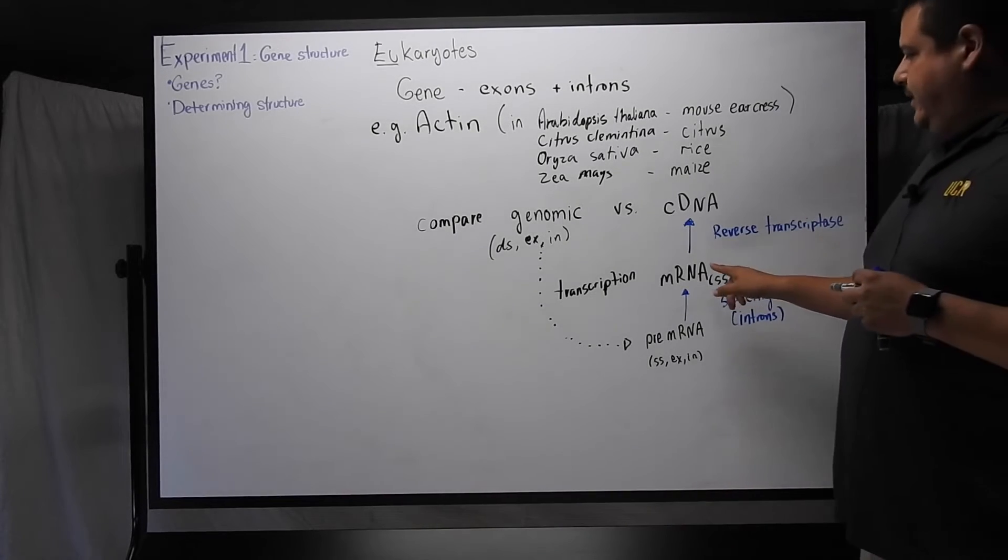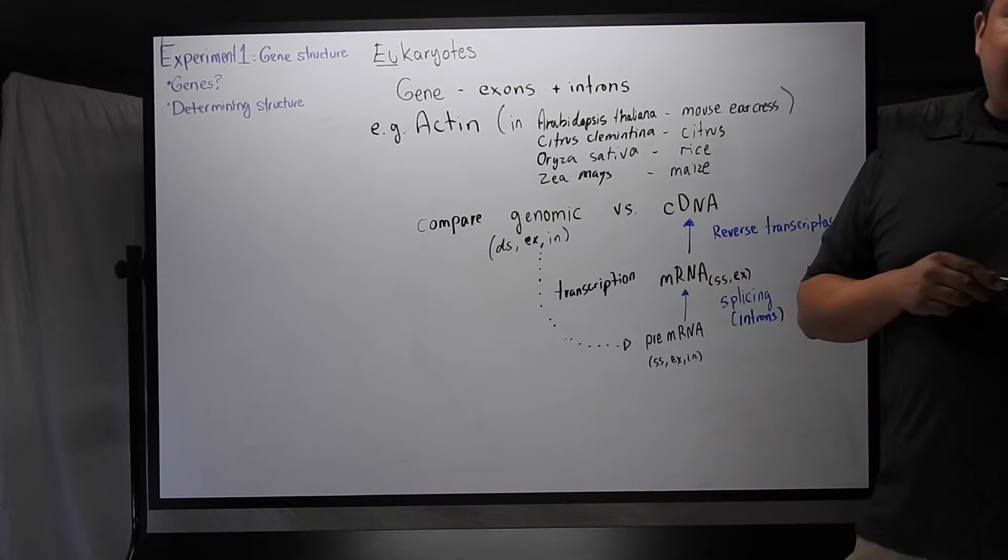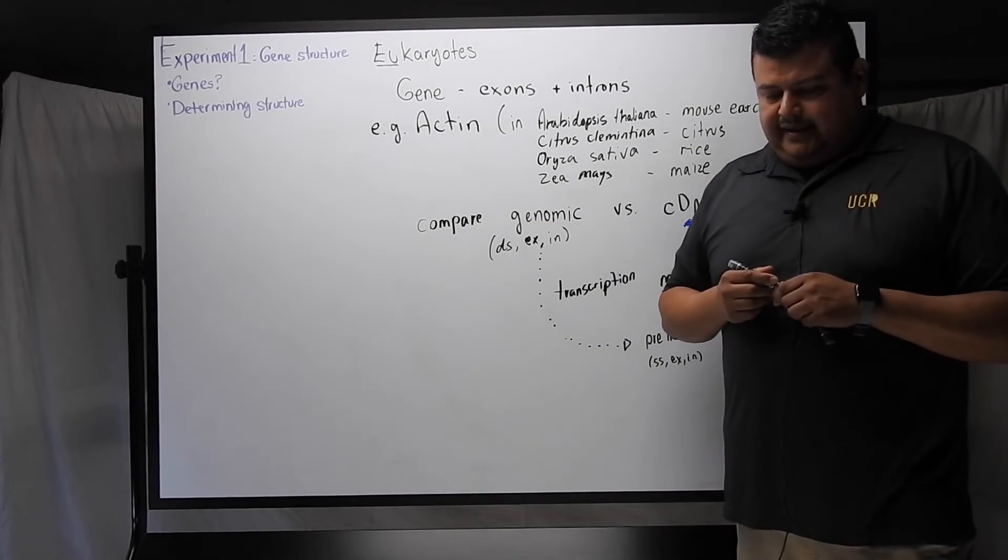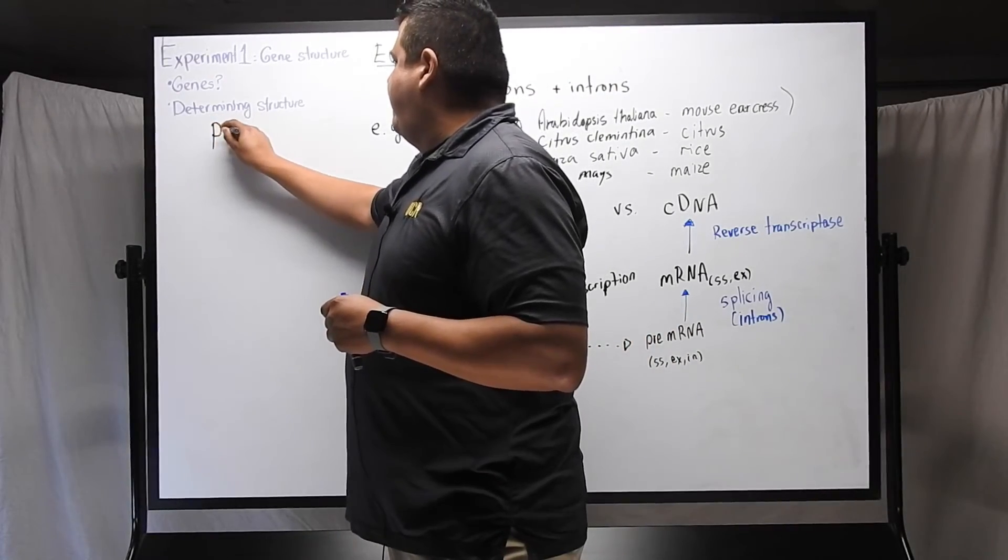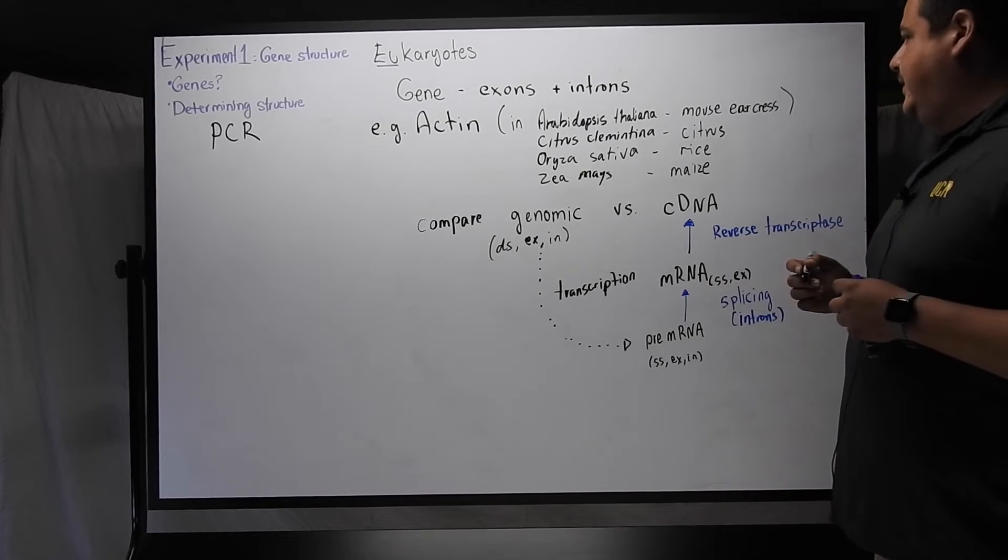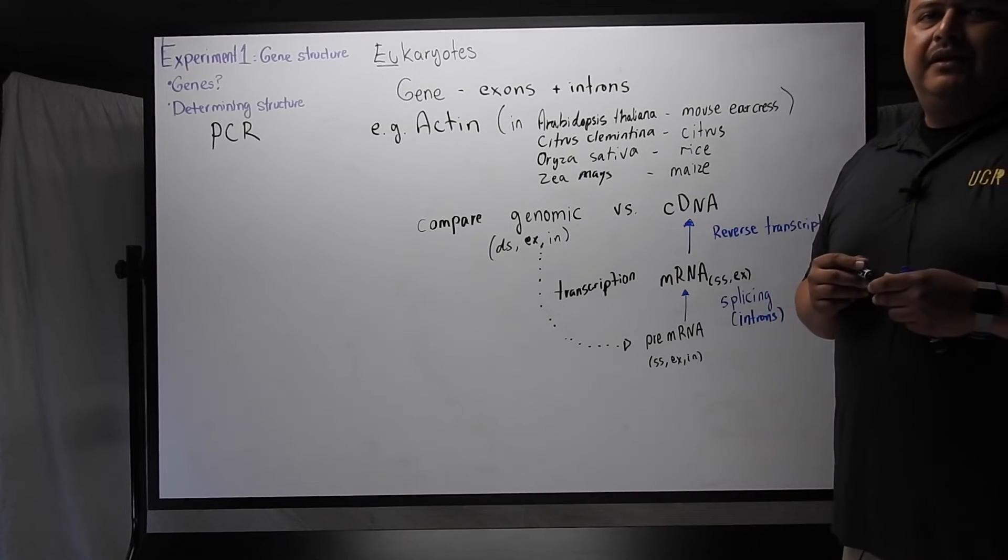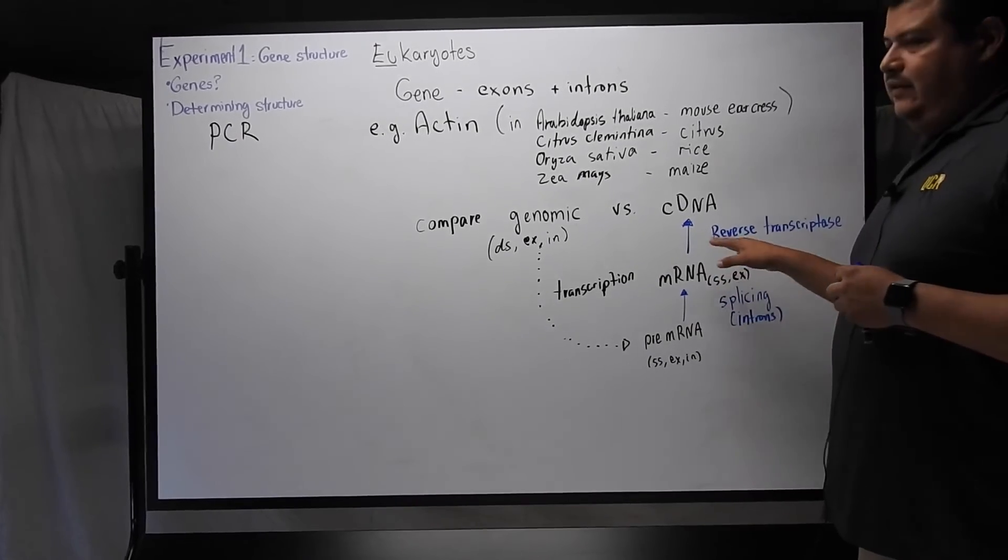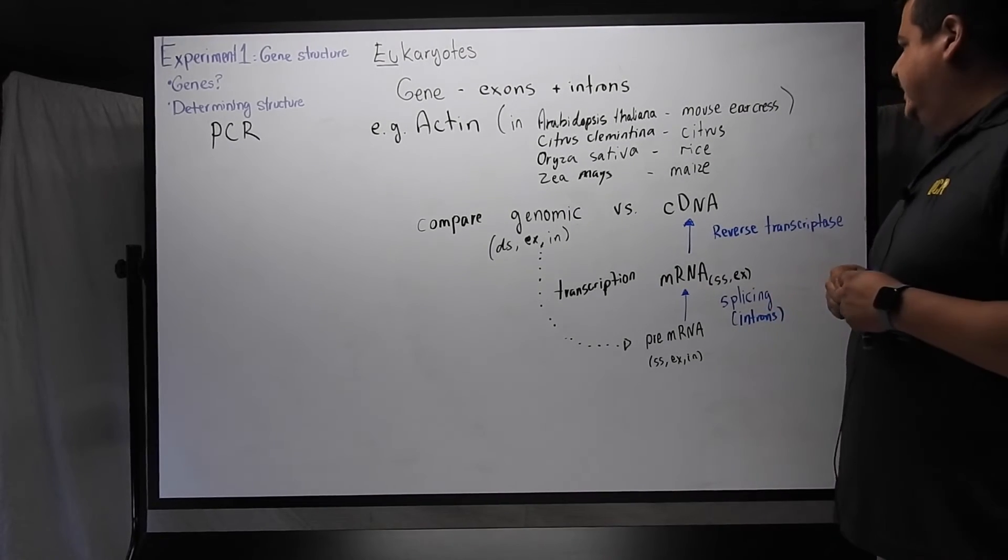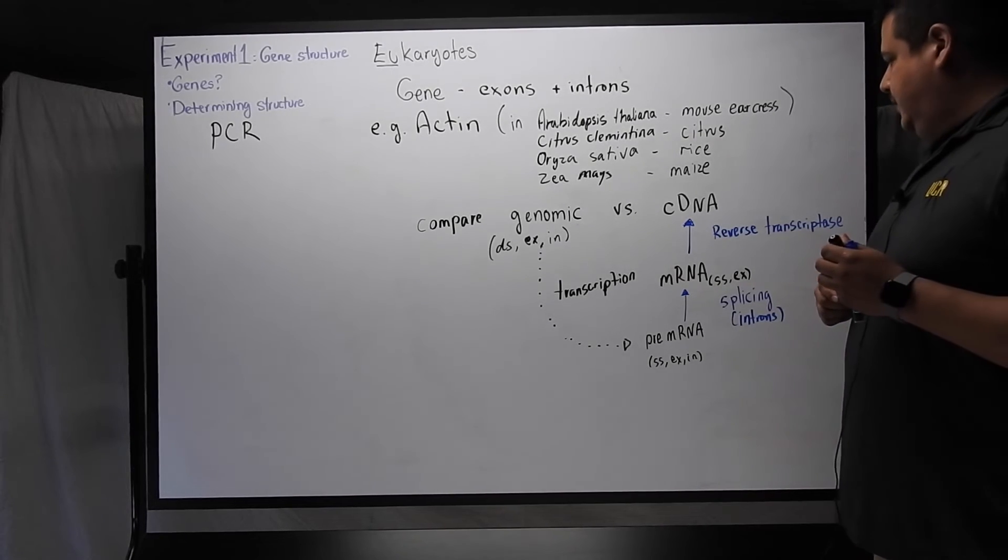So the mRNA then is a single-stranded copy. The splicing has removed the introns, so it only has the exons. And now you're thinking, why can't we just compare the mRNA to the genomic DNA? And why do we have to go through this process? And that goes to how we're going to determine the gene structure. So in order to make this comparison, we rely on a technique called PCR, or the polymerase chain reaction. For that polymerase chain reaction to work, you need double-stranded DNA or a double-stranded template. You need a complementary region of DNA that you can amplify through PCR.